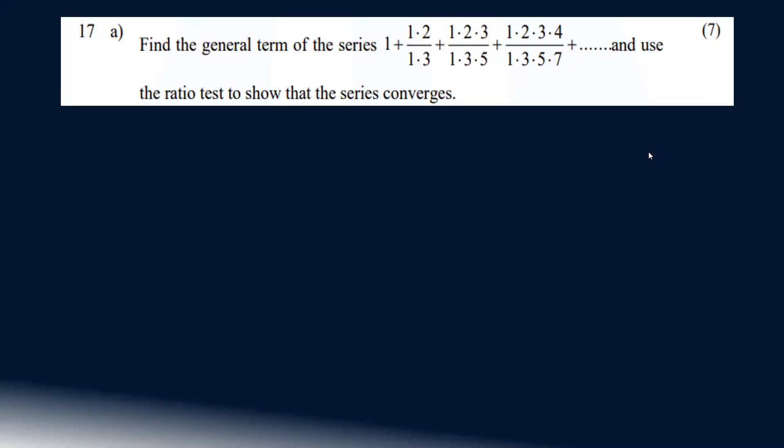Find the general term of the series: 1 plus (1·2)/(1·3) plus (1·2·3)/(1·3·5) and use the ratio test to show that the series converges.